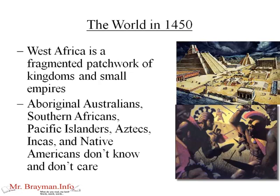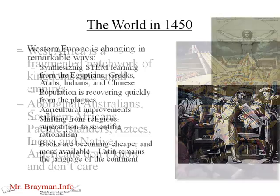West Africa is a fragmented patchwork of kingdoms and small empires — still organized, stable, and successful — but the power is shifting between Ghana, Songhai, and Mali, and sometimes there are threats from the north with Arab coastal armies. And throughout all of this, the Aboriginal Australians, the Southern Africans, the Pacific Islanders, the Aztecs, the Incas, and the Native Americans don't know any of this is going on — and they don't care, because they're still completely cut off from the world network.